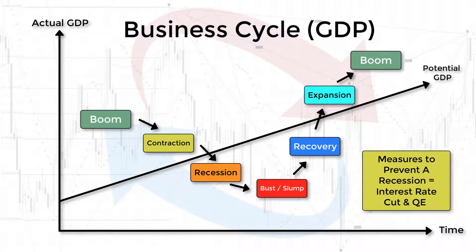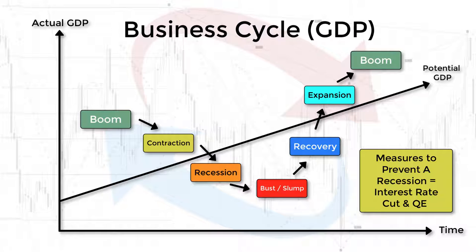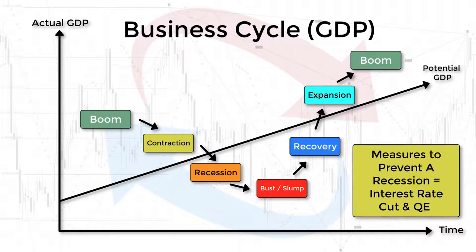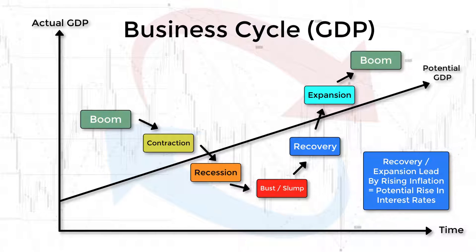In the contraction phase of the business cycle, central banks will look to prevent a recession by employing tools like lowering interest rates and engaging in quantitative easing to boost spending and economic growth. Recovery and expansion phases are usually led by rising inflation, therefore central banks will contemplate raising interest rates.